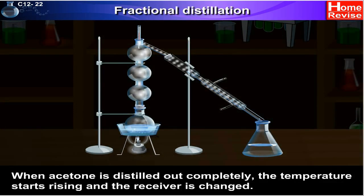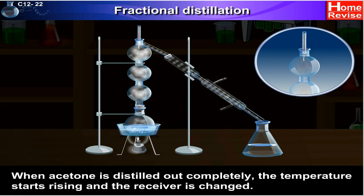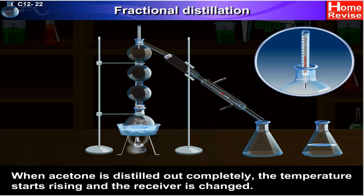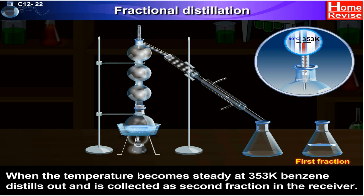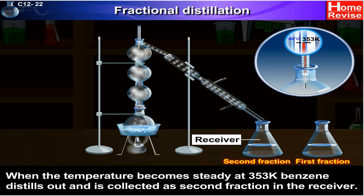When acetone is distilled out completely, the temperature starts rising and the receiver is changed. When the temperature becomes steady at 353 kelvin, benzene distills out and is collected as the second fraction in the receiver.